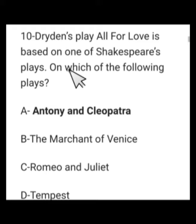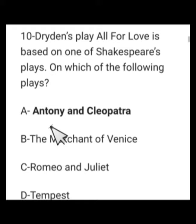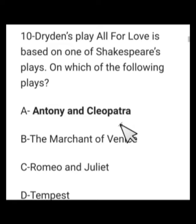Number 10: Dryden's play 'All for Love' is based on which of Shakespeare's plays? Options: Antony and Cleopatra, The Merchant of Venice, Romeo and Juliet, or The Tempest. This was based on Antony and Cleopatra. 'All for Love' is a tragedy written in blank verse, a heroic drama written by Dryden, based on Shakespeare's Antony and Cleopatra.